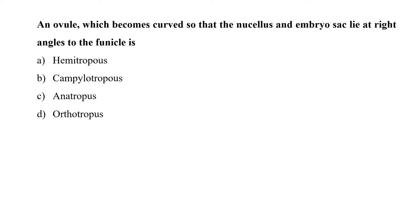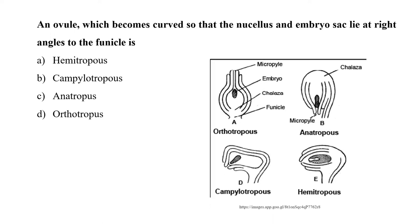The next question is: an ovule which becomes curved so that the nucellus and embryo sac lie at right angles to the funicle. As shown in the given picture, the orthotropous ovule is completely straight with the micropyle at its apex. In the anatropous ovule, the ovule is completely inverted, turned back 180 degrees on its stalk. In the campylotropous ovule, the body of the ovule is curved and bent so that the micropyle and chalaza do not lie in the same straight line.